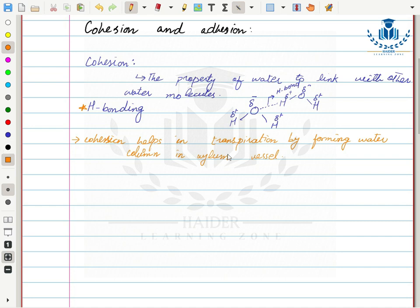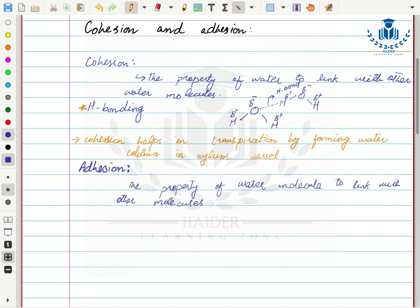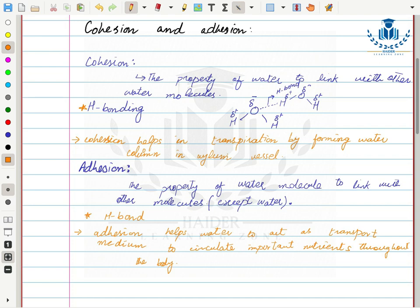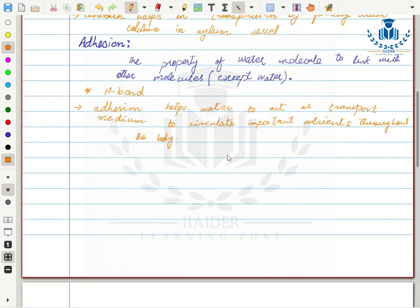The second property is adhesion. Adhesion is the property of water molecules to link with other molecules — basically all molecules except water itself and other hydrophobic molecules. Adhesion helps water act as a transport medium to circulate important nutrients throughout the body through hydrogen bonding between water and other molecules, transporting water to different parts of the body.